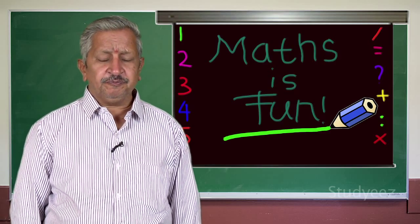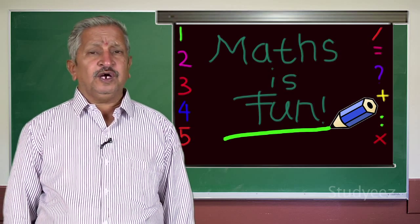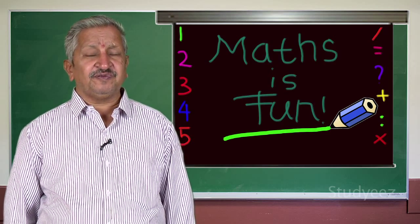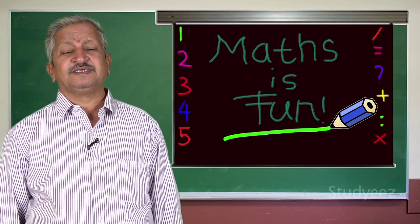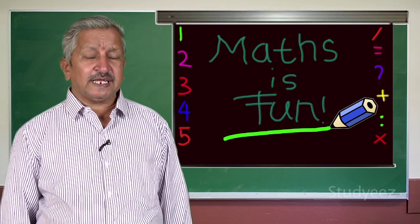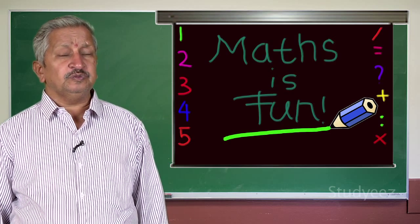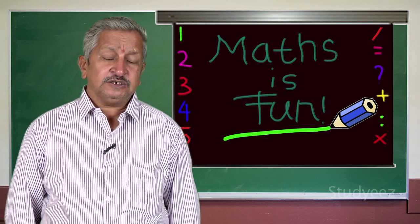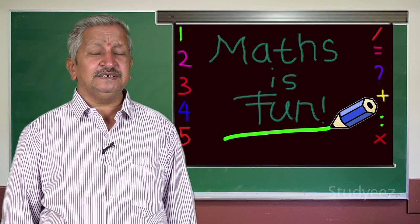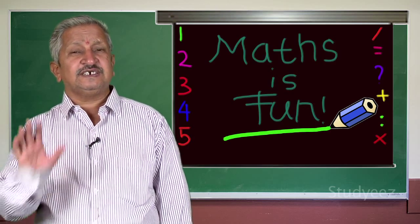Dear students, today we are going to learn how to learn the tables. Generally, your parents and most of the teachers ask you to read the table 15 or 20 times, which is nothing but rote learning. In that method, suppose you have learnt the 12 table by reading it 15 or 20 times — if I ask you what is 12 sevens are, you go on reading the table from the beginning up to 12 sevens. But I have a very easy method to learn the table, with which if I ask you what is 12 sevens are, directly you will say 12 sevens are 84.